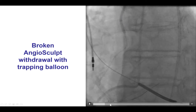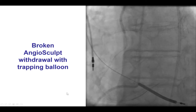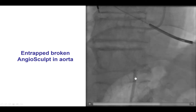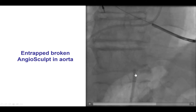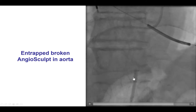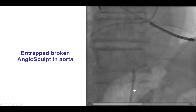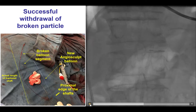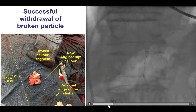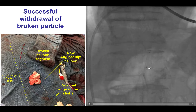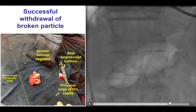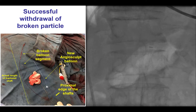As you can see, the trapping balloon was actually protruding partially from the guide catheter, but we did have a significant portion of the balloon inside the guide catheter. Unfortunately, when we came to the sheath, we could not pull the balloon back into the sheath because that protruding part of the balloon was too large. But fortunately, after we deflated the trapping balloon, we were then able to retrieve both the trapping balloon and the fragment of the angiosculpt balloon back into the guide and all the way out from the body.